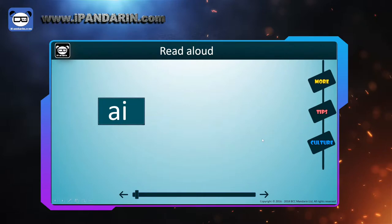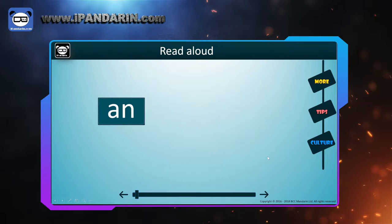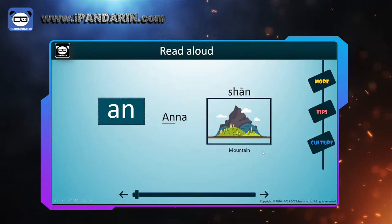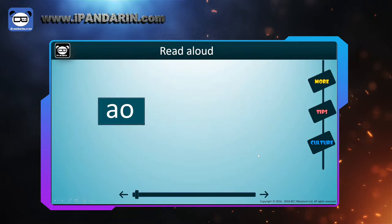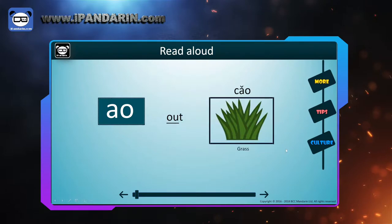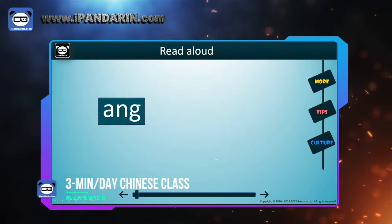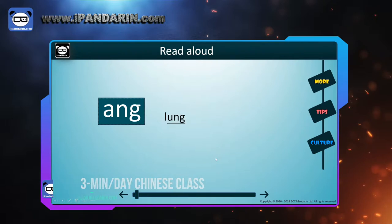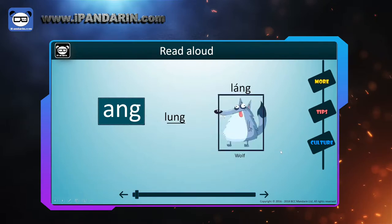AI — like 'I' in 'tight'. And in Chinese, 白 (bái), which means white. AN — like 'an' in 'Anna'. And in Chinese, 山 (shān), which means mountain. ANG — like 'ang' in 'lung'. And in Chinese, 狼 (láng), which means wolf.